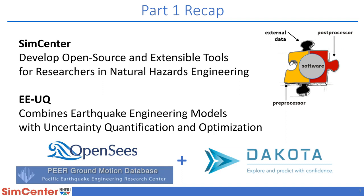What EEUQ actually does is combine earthquake engineering models — for instance using OpenSees — with uncertainty quantification and optimization tools available in Dakota. In addition, it interfaces with external databases and web services like the PEER Ground Motion database and USGS web services. That's the big picture of what EEUQ does.